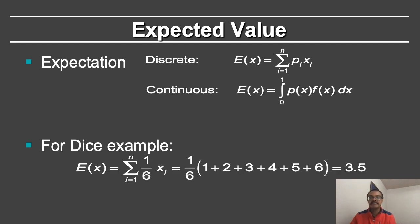For the dice example, the expected value of the dice roll will be the sum of the random variables xi weighted by 1 over 6. So 1 sixth of 1 plus 2 plus 3 plus 4 plus 5 plus 6, which is equal to 1 sixth of 21, which is equal to 3.5.